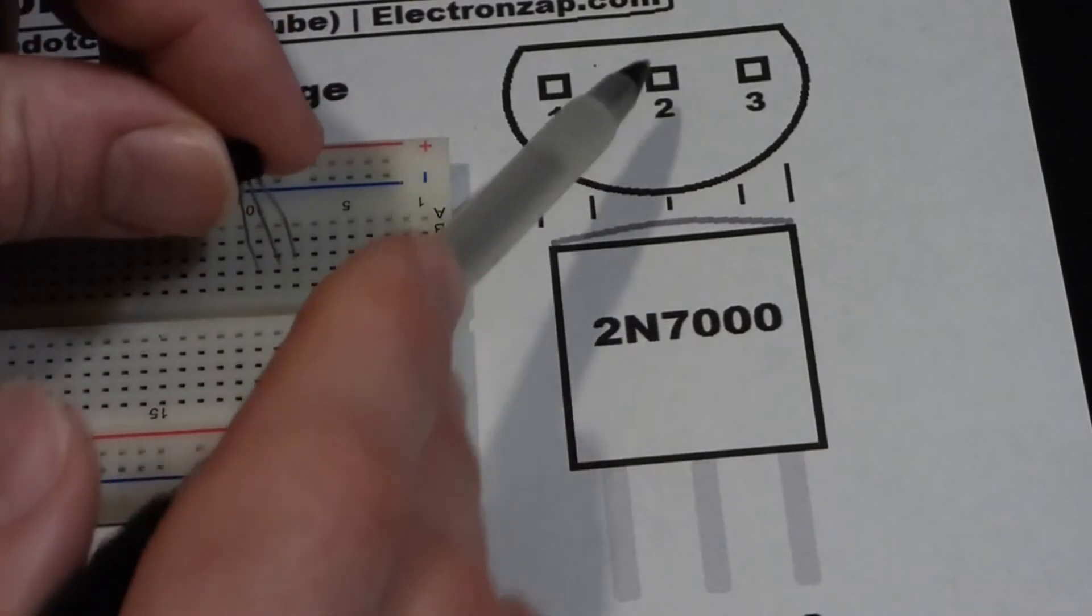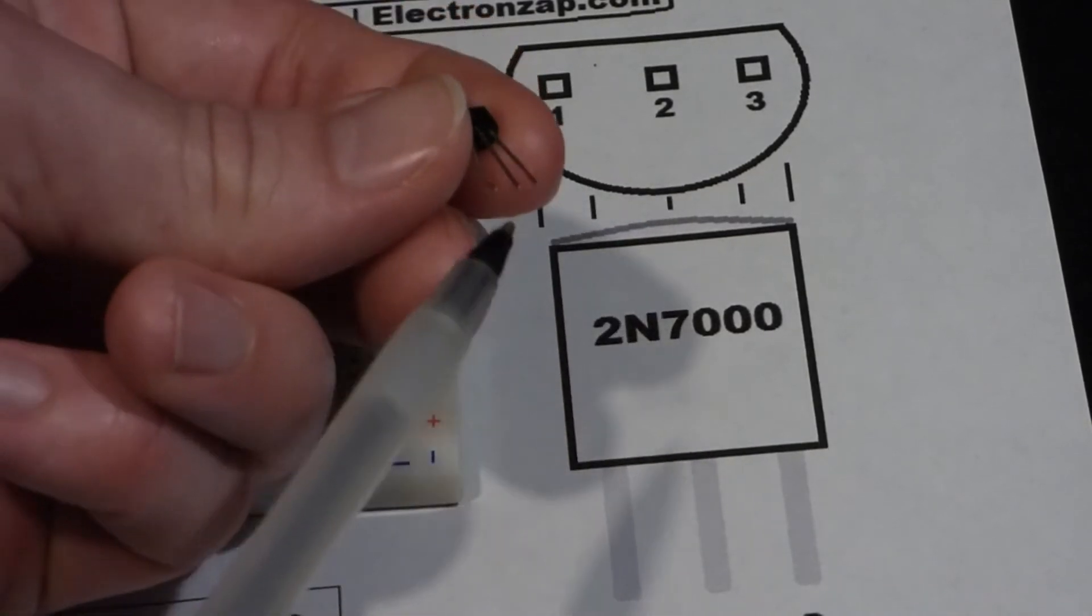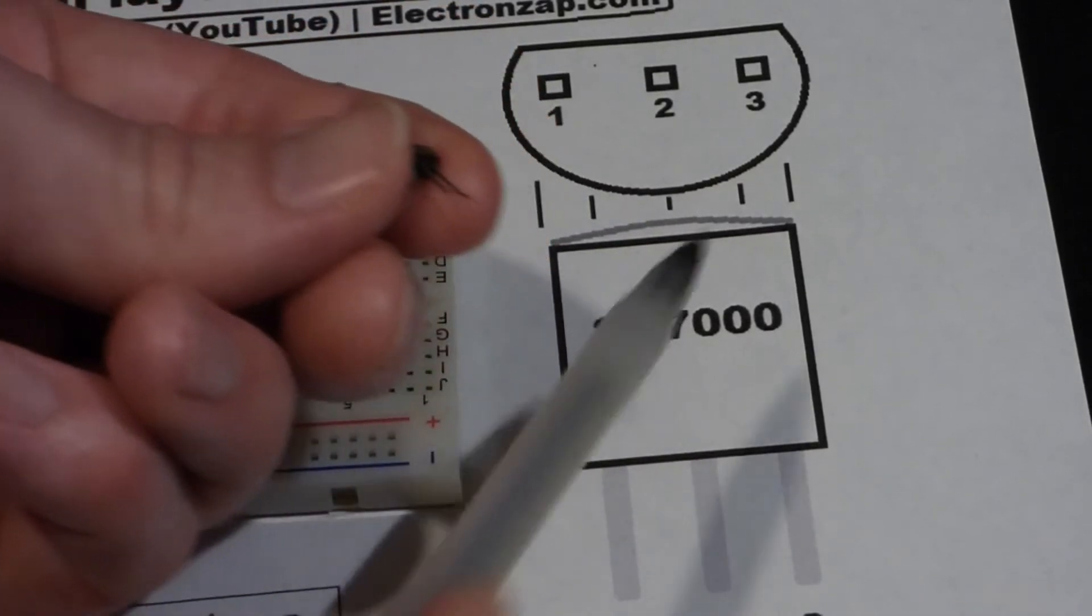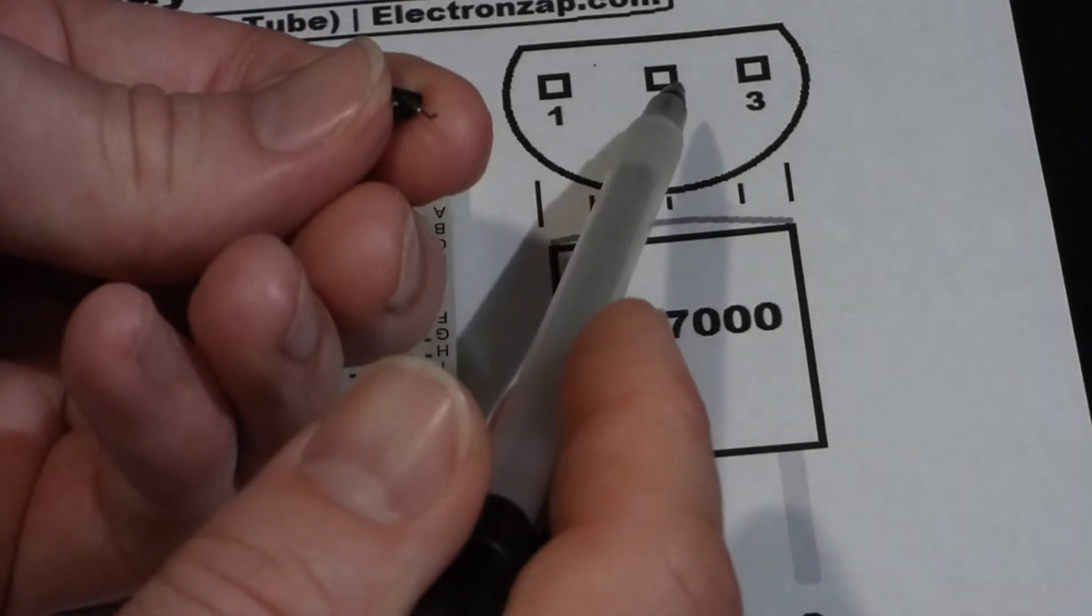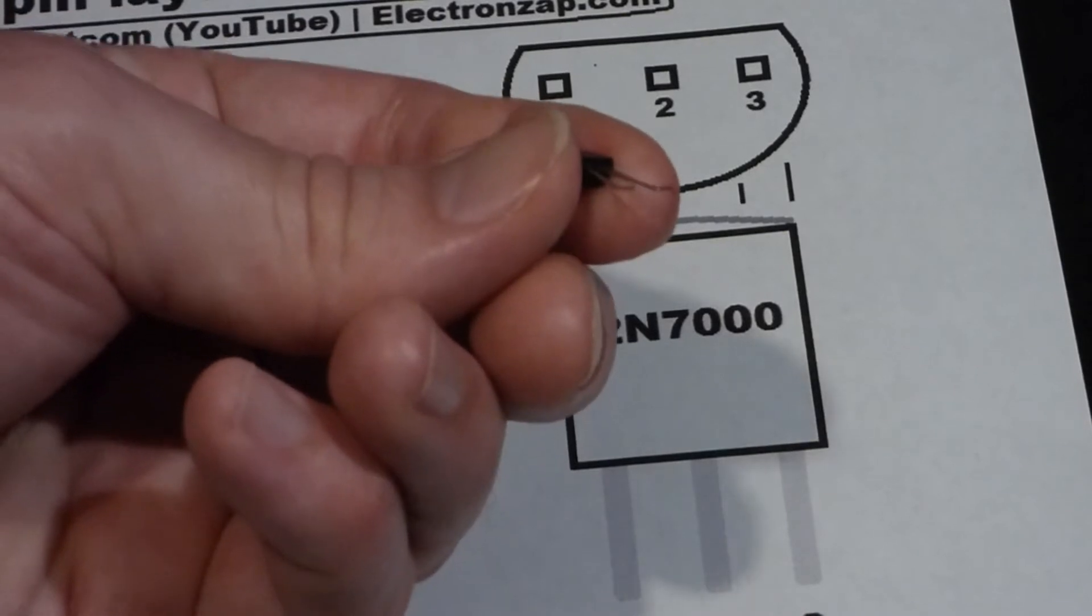And so all this is saying is point the legs towards you, the pins towards you, and then have the flat edge on top. And then one will be on the left, two will be in the middle, and three will be on the right.